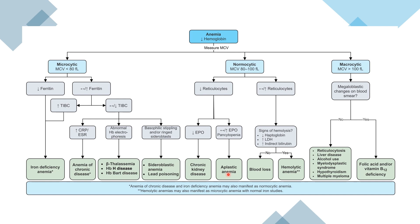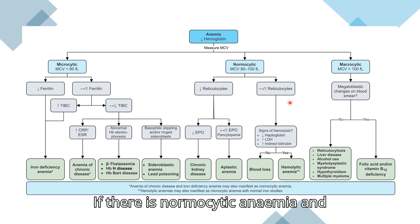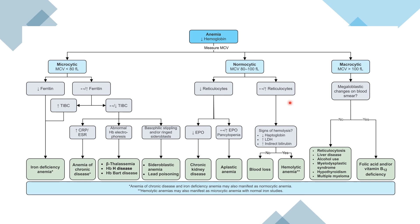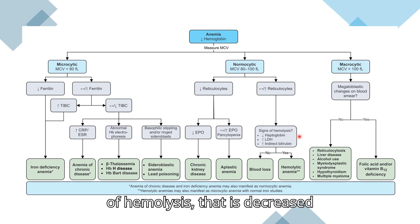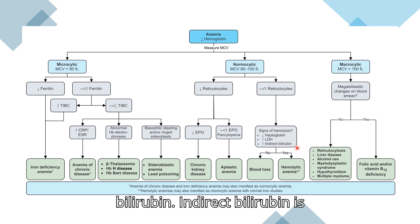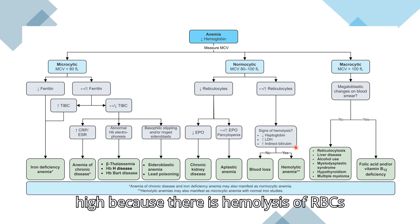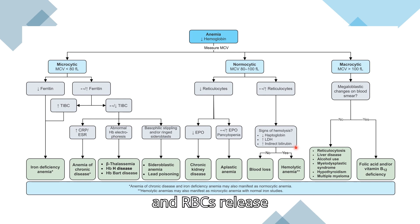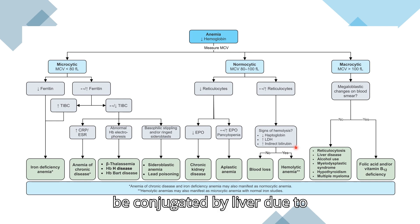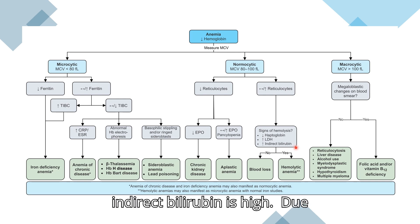If normocytic anemia is present with decreased reticulocytes and increased or normal erythropoietin and pancytopenia, it is aplastic anemia. If there is normocytic anemia with normal or increased reticulocytes and signs of hemolysis — that is decreased haptoglobin, increased lactate dehydrogenase, and increased indirect bilirubin — indirect bilirubin is high because hemolysis of RBCs releases bilirubin which cannot be conjugated by the liver due to overload.